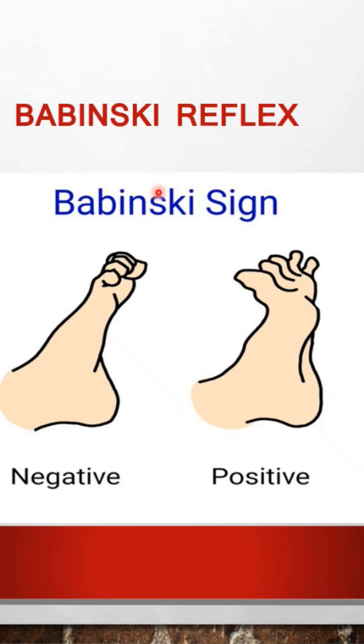The Babinski reflex — when you stroke the sole, the toes fan out. Disappearance age is 12 months.